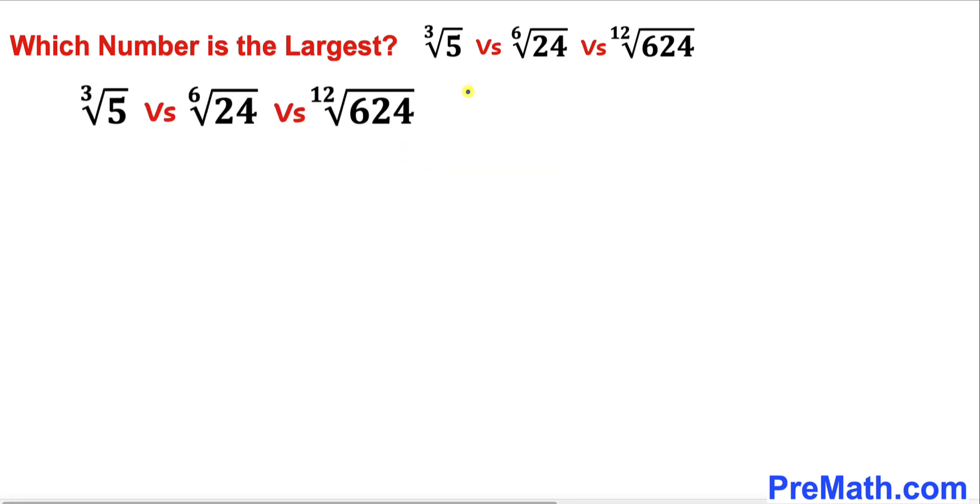Let's get started. We are going to write these numbers that are in radical form into exponential form by using this basic rule. As you can see in this next step, the cube root of 5 has become 5 to the power 1 over 3, and likewise for these two numbers as well.